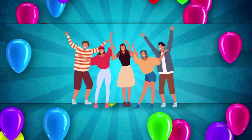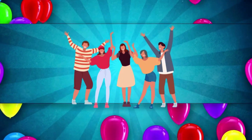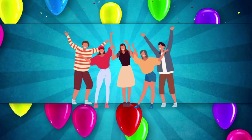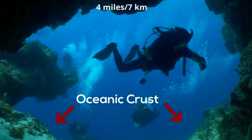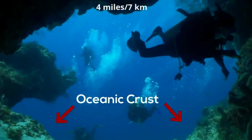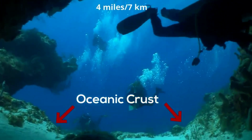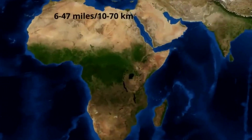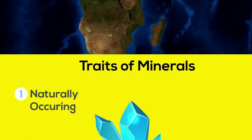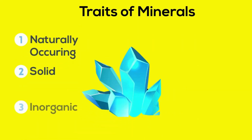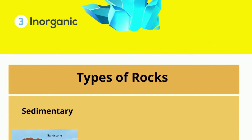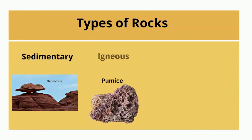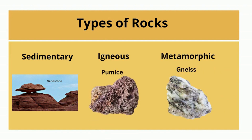Upon completion of the course you will know much more about the following. The earth is composed of layers including the crust, mantle, outer core, and inner core. Minerals are naturally occurring inorganic substances with a definite chemical composition. Igneous, sedimentary, and metamorphic rocks are the three main rock types.